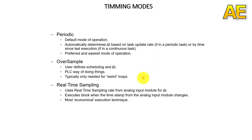The second timing mode is oversample. With this mode, the user needs to define scheduling and delta T. This mode is only used for special loops. The final timing mode is real-time sampling, which uses the real-time sampling rate from the analog input module for delta T, executing the block when the timestamp from the analog input module changes. It is the most economical execution technique.